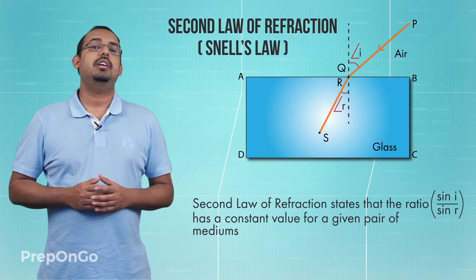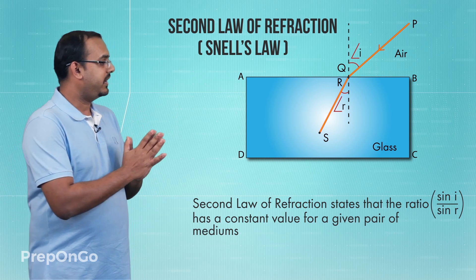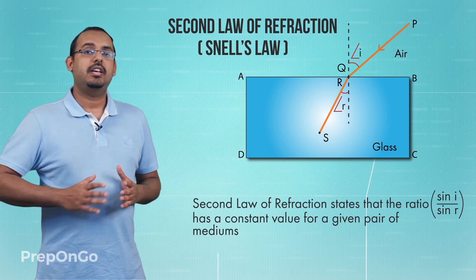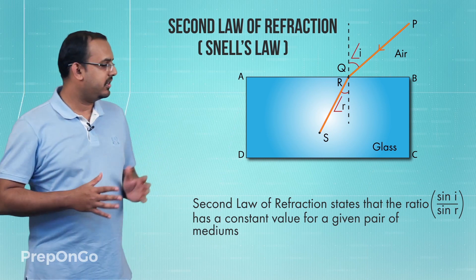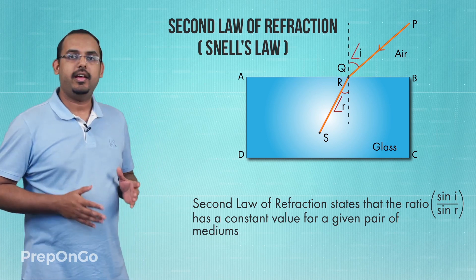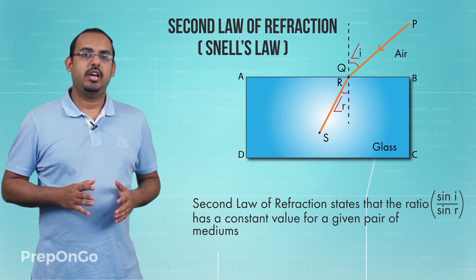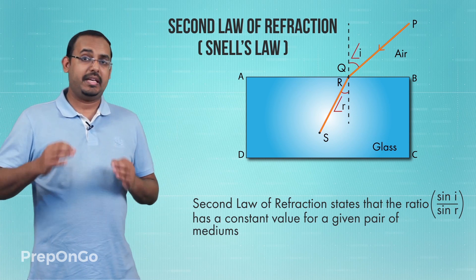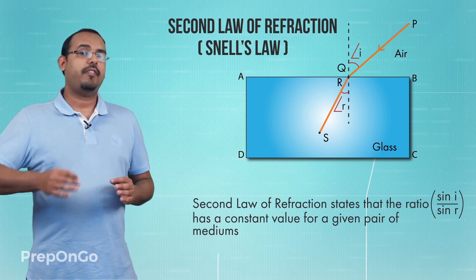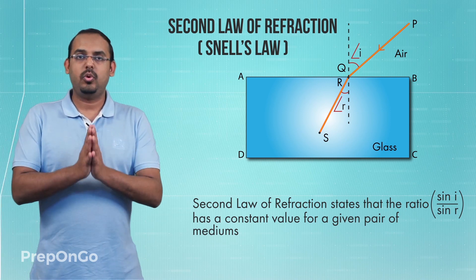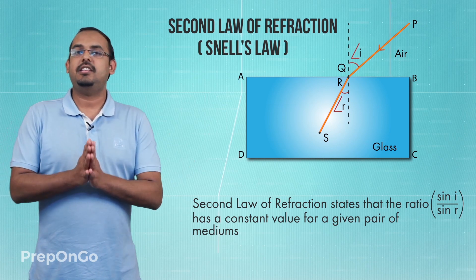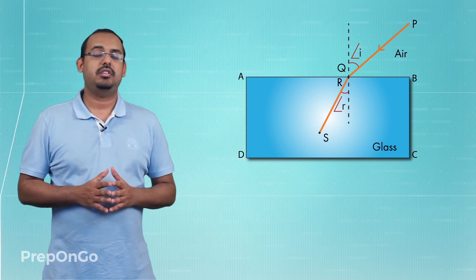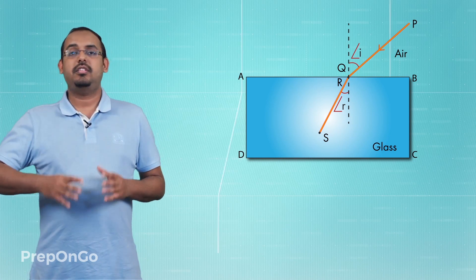The second law of refraction states that the ratio of the sine of the angle of incidence to the sine of the angle of refraction — that is, sine i upon sine r — is a constant value for a given pair of mediums. Here the two mediums are air and glass. Whatever angle the light might be incident at, this ratio is always constant for these two mediums. This second law of refraction is also known as Snell's law of refraction.